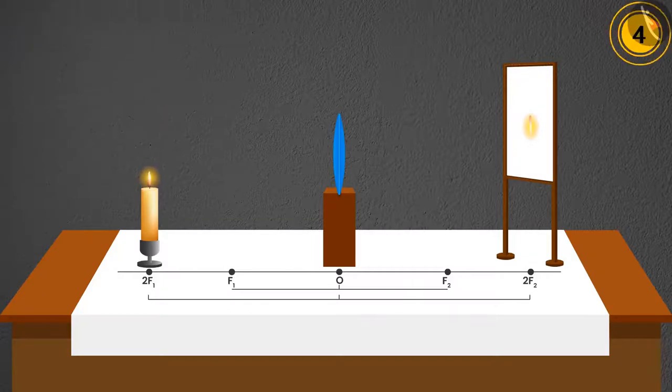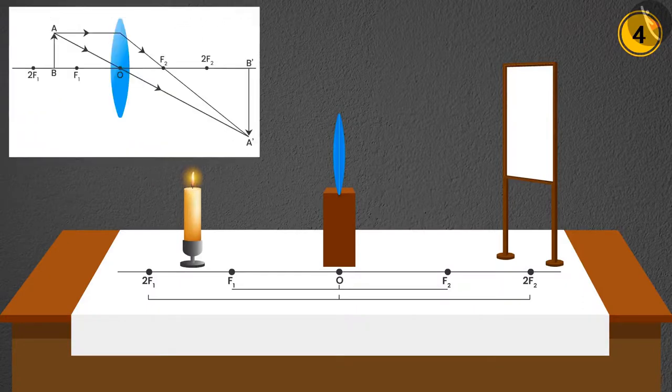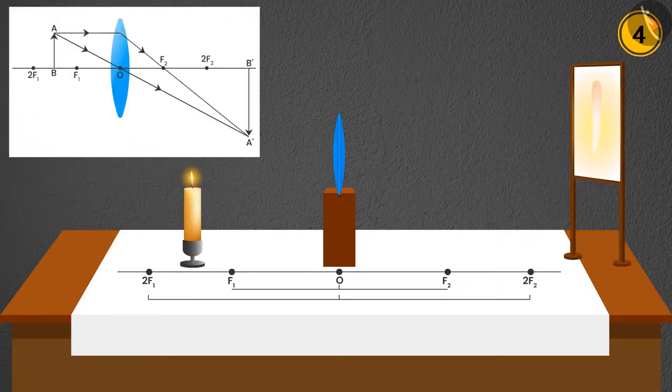Case 4: If the candle is placed between 2F1 and F1, then we will get image beyond 2F2. It will be larger in size and real and inverted in nature.